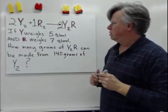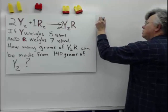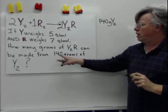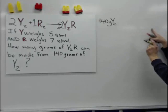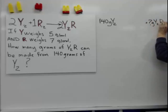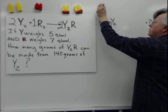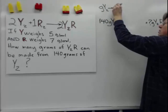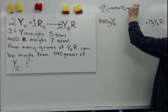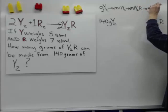To solve this, we start with our given amount: 140 grams of Y₂. We're trying to figure out how many grams of Y₂R can be made. The first step is to convert from grams of Y₂ to moles of Y₂, then compare moles of Y₂ to moles of Y₂R using the mole ratio, and finally convert to grams of Y₂R.